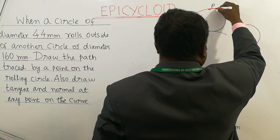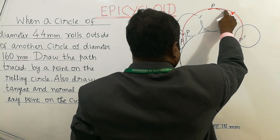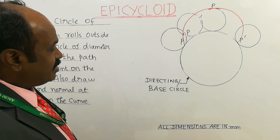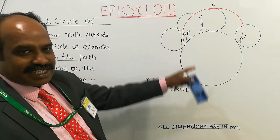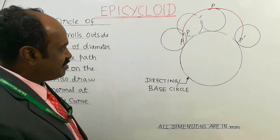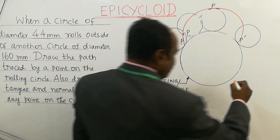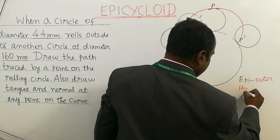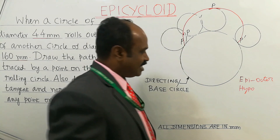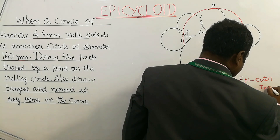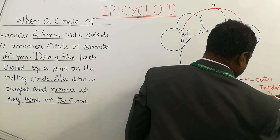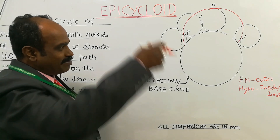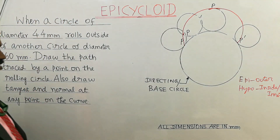The curve generated is called epicycloid. 'Epi' means outer, so when the circle rolls outside and forms a curve, that is epicycloid. 'Hypo' means inside — there is one more curve called hypocycloid, where hypo means inside or inner. In this case, since the rolling circle rolls outside and the contact takes place between the rolling circle and the directing circle on the outside, it is called epicycloid.